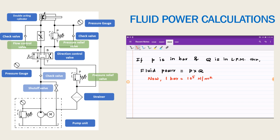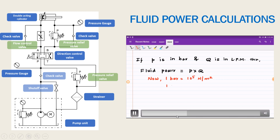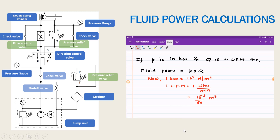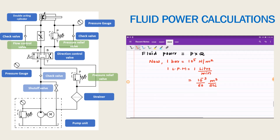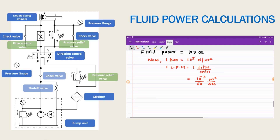One liter per minute equals: one liter is 10 to the power minus 3 meter cube, and one minute is 60 seconds, so it is 10 to the power minus 3 divided by 60 meter cube per second. Let us substitute these numerical values in the expression for fluid power.